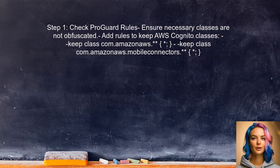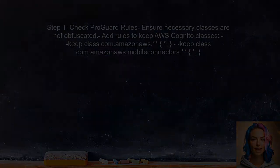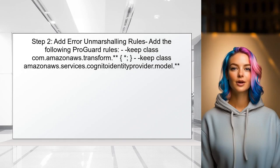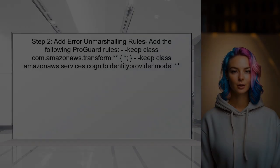To address the issue with the AWS Cognito SDK in the release version, first check the ProGuard rules. It's essential to ensure that the necessary classes are not being obfuscated. Next, add specific rules for error unmarshaling. This will help retain the error handling classes that are crucial for proper exception handling.